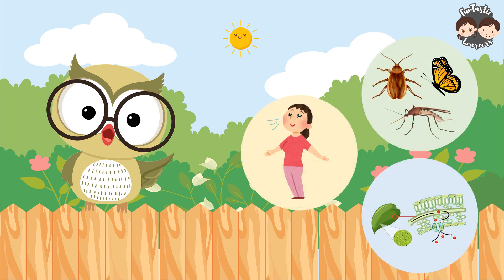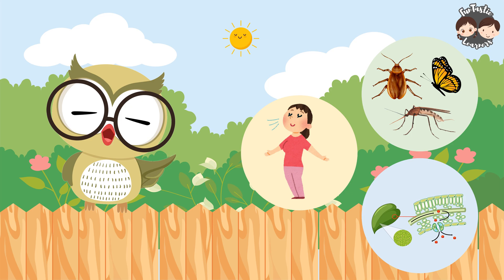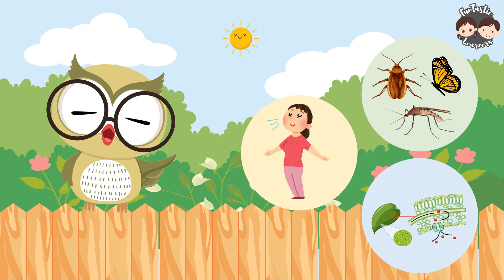All living things need air to breathe. Humans and several other animals breathe through their noses. Cockroaches, butterflies, and mosquitoes breathe through air holes in their body. Plants breathe through tiny holes called stomata.